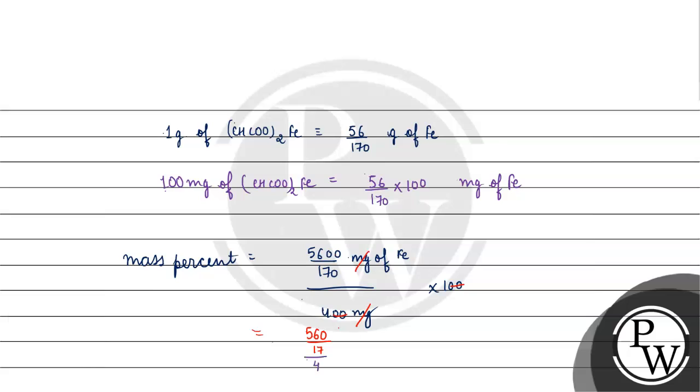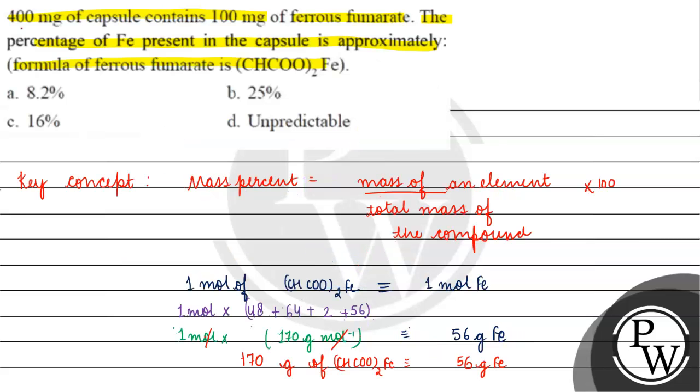What will happen to us? 560 by 68 mg of iron, which gives us 8.23%. Coming back to the question, correct answer for this question will be option A. I hope you understood. Thank you and all the best.